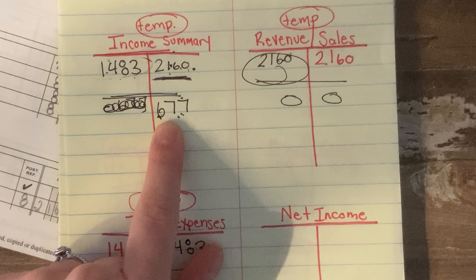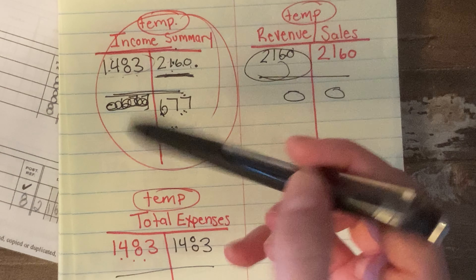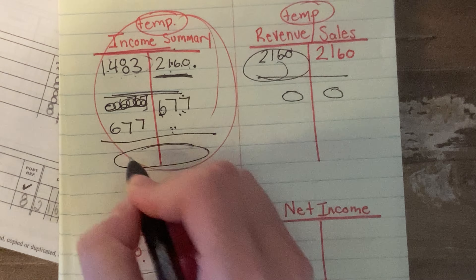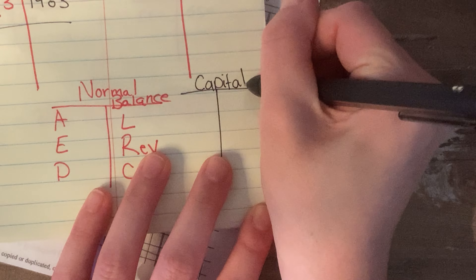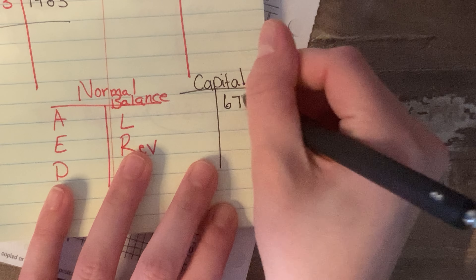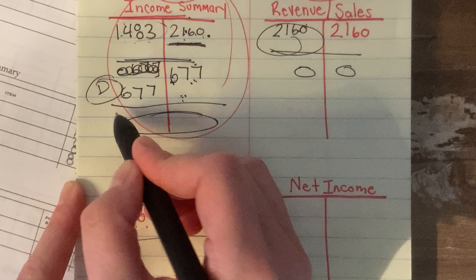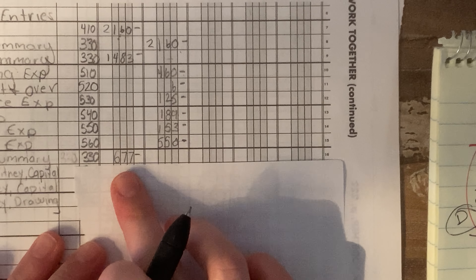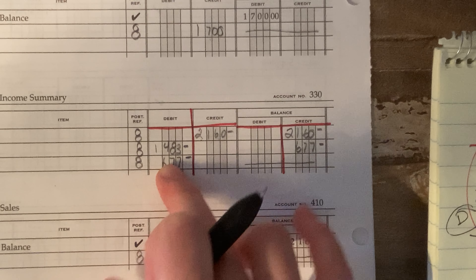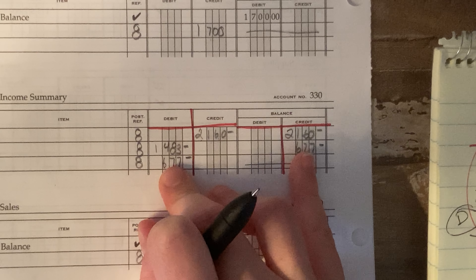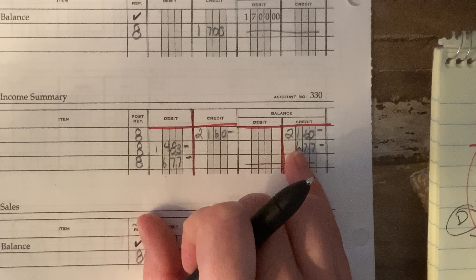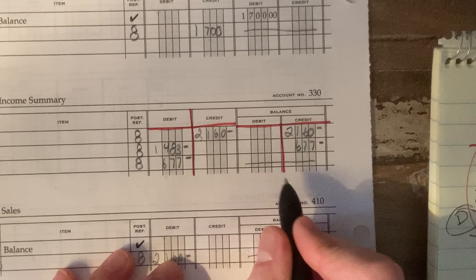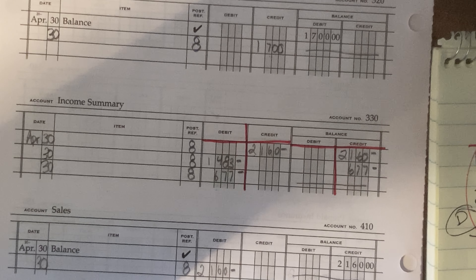I'll show you how I posted this information. First, I posted the sales — closing entry, income summary, $2,160 credit. So income summary gets $2,160 on the credit side. Then I carry out the running balance. These are active T-accounts, just like the ones I drew out. This is literally a T-account, but you have to read the column header up here — it says 'balance,' which means it's a running total T-account where you constantly have to do math.